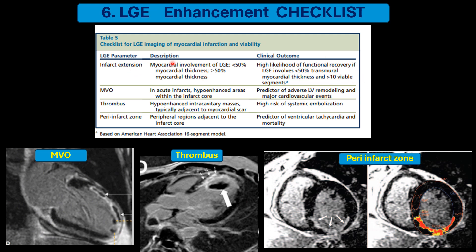Other things recently coming up: microvascular obstruction (MVO) is more picked up in early gadolinium enhancement, which is between 3 to 5 minutes, whereas LGE is between 10 to 20 minutes. Within the non-enhancing areas we can see some hypointense signal areas — these are non-viable tissues with obstructed blood vessels containing stagnant blood. MVO has a very poor prognosis with adverse LV remodeling and major cardiovascular events.